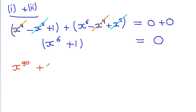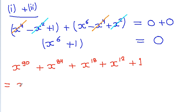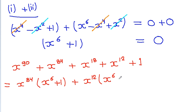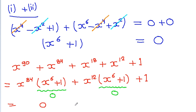Now evaluating x⁹⁰ + x⁸⁴ + x¹⁸ + x¹² + 1: taking x⁸⁴ common from the first two terms gives x⁸⁴(x⁶ + 1), and taking x¹² common from the next two gives x¹²(x⁶ + 1), plus 1. Since x⁶ + 1 = 0, we get 0 + 0 + 1 = 1.